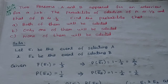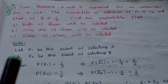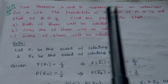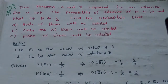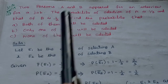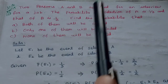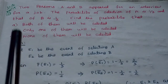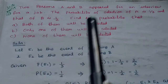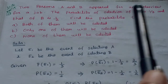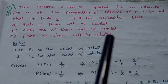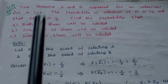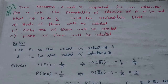This is a University TEDMARC question. Two persons A and B appear for an interview for a job. The probability of selection of A is 1 by 3 and that of B is 1 by 2. Find the probability that: both of them will be selected, only one of them will be selected, and none of them will be selected.